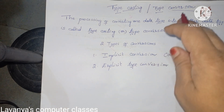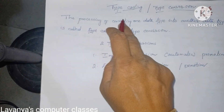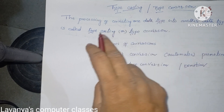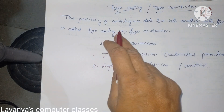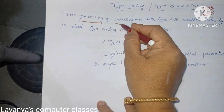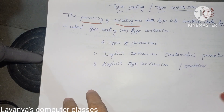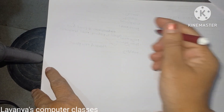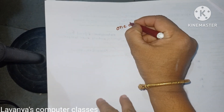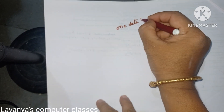What is typecasting or type conversion? The process of converting one data type into another data type is called as typecasting.